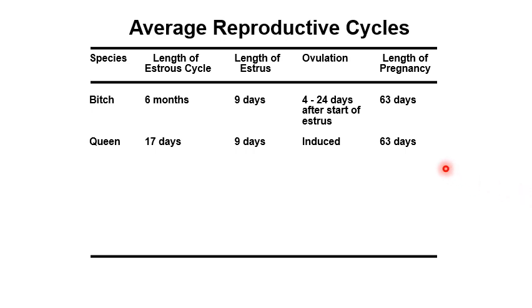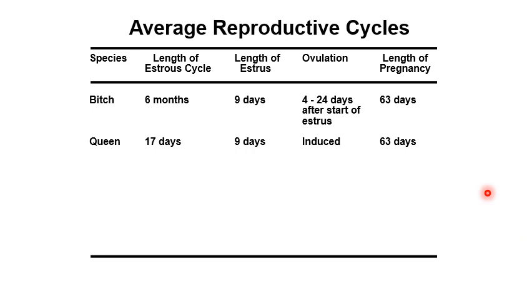We also have the queen (cat). The queen has a 17-day estrous cycle and the length of estrus is about 9 days. The queen is known as an induced ovulator, meaning that breeding or mating induces ovulation. The queen is also considered to be a seasonally polyestrous animal.